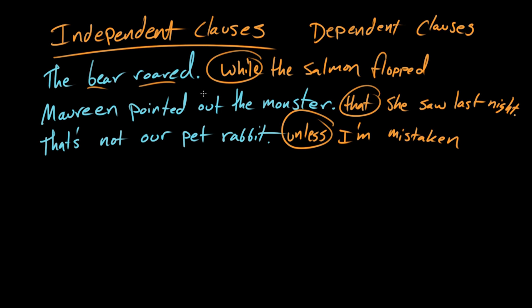And it's in fact not necessary for comprehending the first sentence or the first clause. The independent clause. The bear roared. And if we did combine these, you would realize that the salmon flopped is just background information. Right. Right.